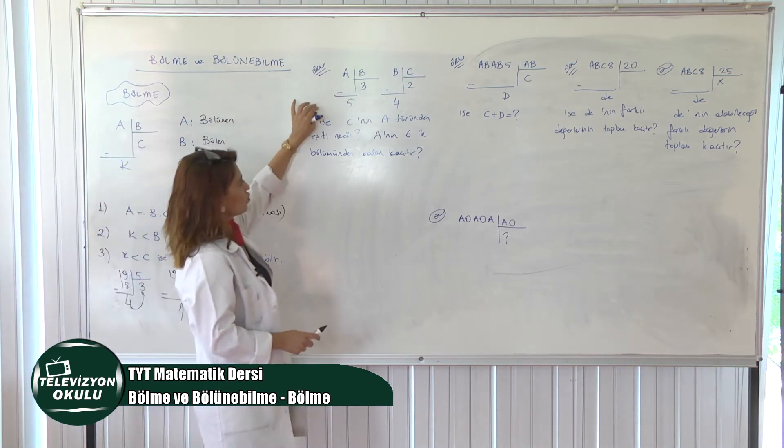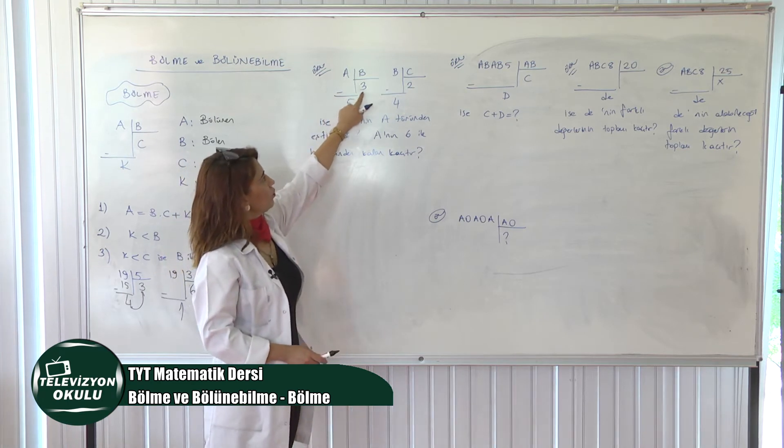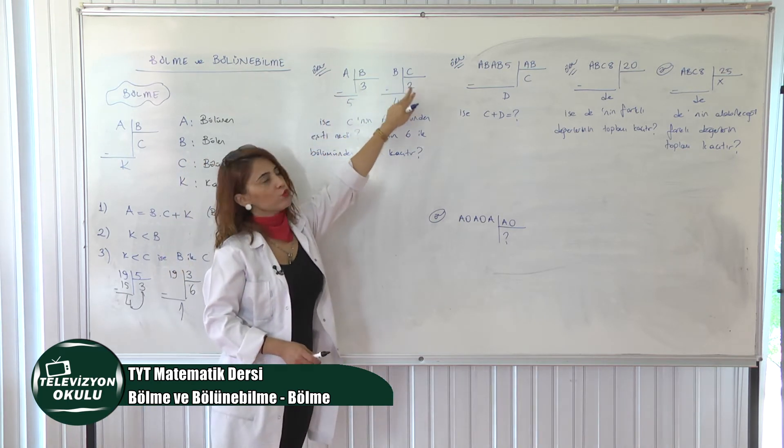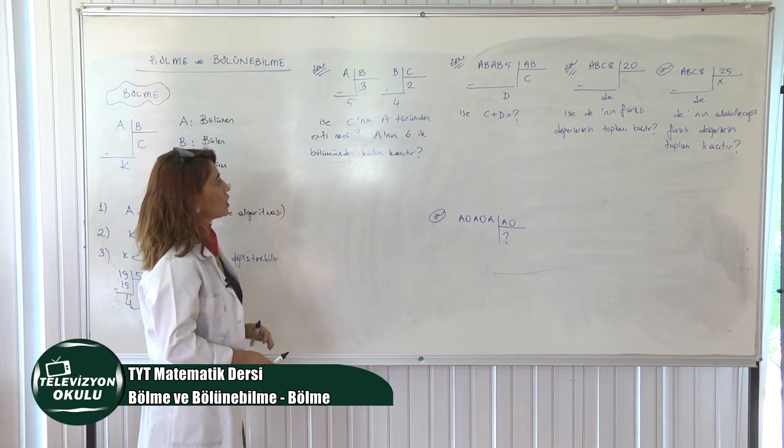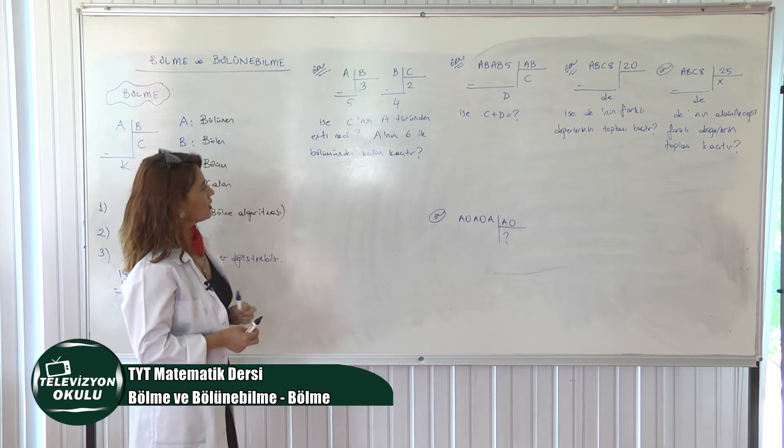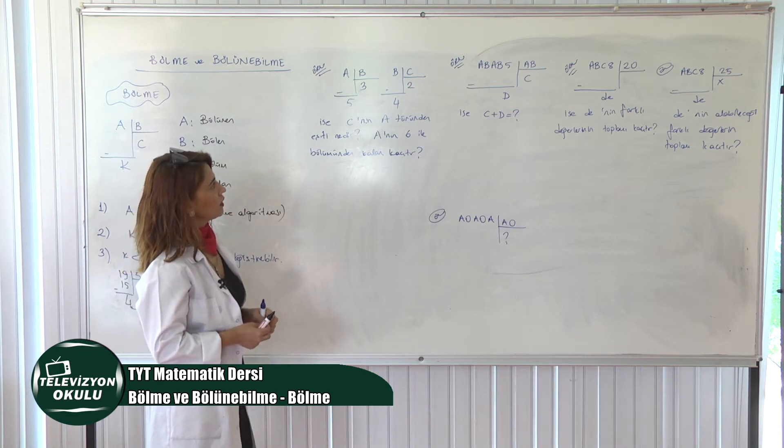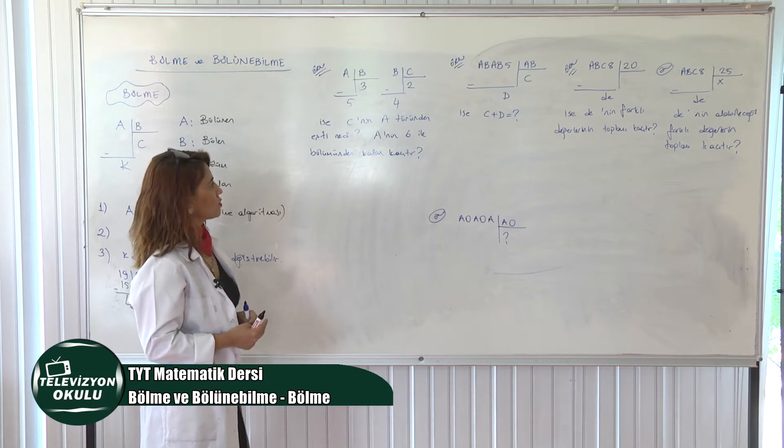Önemli dediğim gibi. Evet, ilk sorumuza başlayalım. A, B'ye bölündüğünde bölüm C'ye kalan 5'miş. B, C'ye bölündüğünde bölüm 2 kalan 4'miş. C'nin A türünden eşiti nedir? A'nın 6 ile bölümünden kalan nedir? 2 tane soru yazmış olduk.